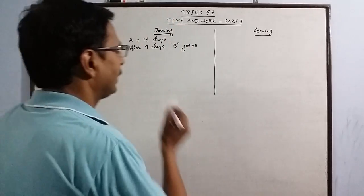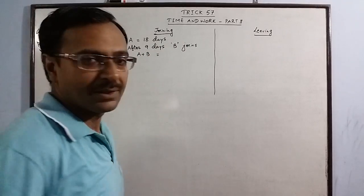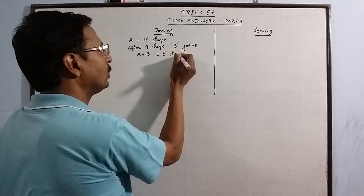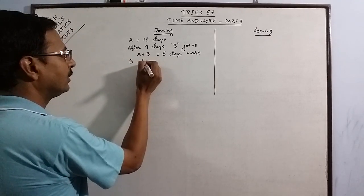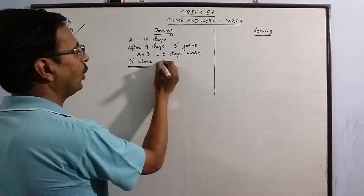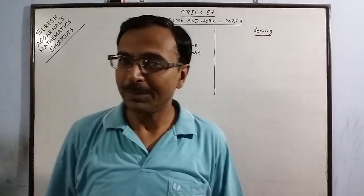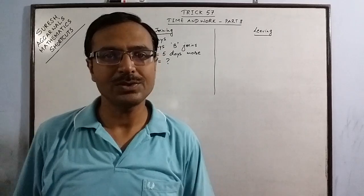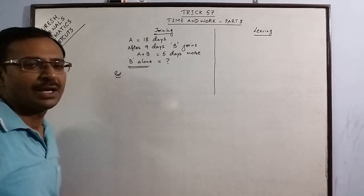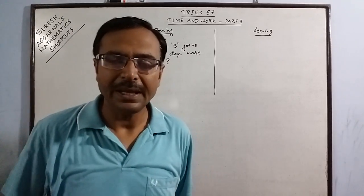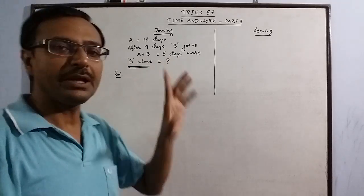When A and B work together after nine days, they take just five more days to complete the work. The question is: if B works alone, how many days will he take to complete the work? Though it seems complex, with a little understanding you can solve this very easily. A was there throughout the task, but B was there only for five days.